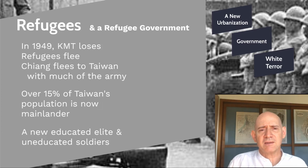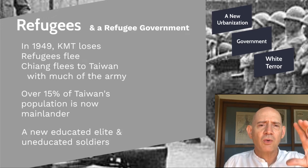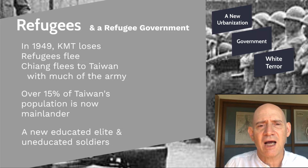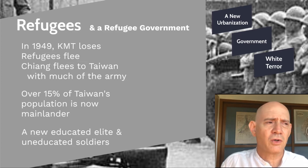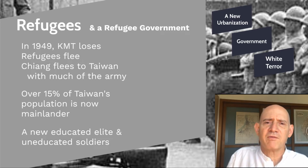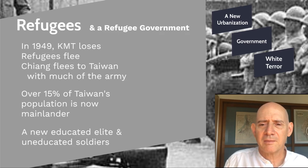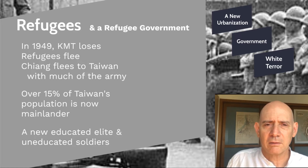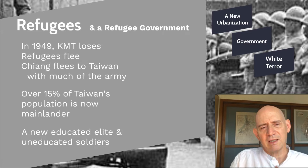On the other hand, there are also a lot of mainlanders coming in who are often illiterate soldiers. During the wartime period, regular conscription had long since broken down. The way they got soldiers was often surrounding a village and rounding everybody up — anyone close to military age was suddenly drafted. These are people who often have very little education, probably illiterate, and some have no idea what Taiwan even is or where they're going when they get on the ship. So mainlanders split between the educated and the uneducated.